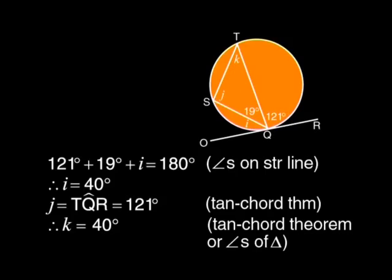Now look for what you know about angle j. Can you calculate j? Did you see that angle j is the angle in the alternate segment to angle TQR? And we already know that angle TQR is 121 degrees. So j is 121 degrees. The reason used is simply Tan-Chord Theorem.